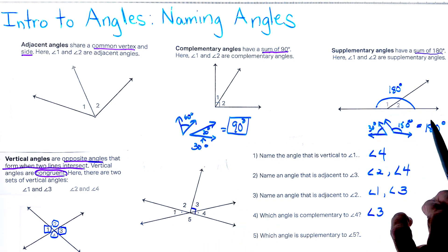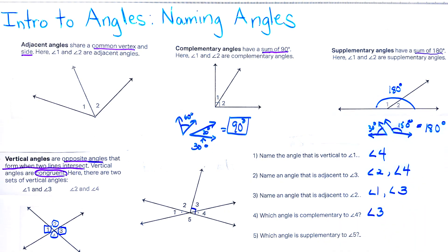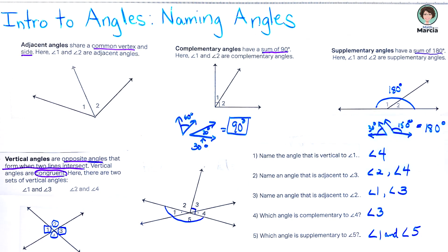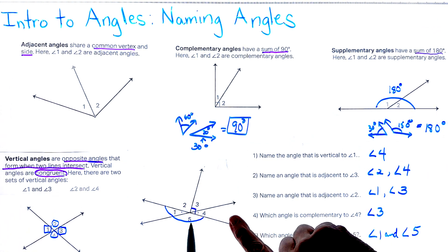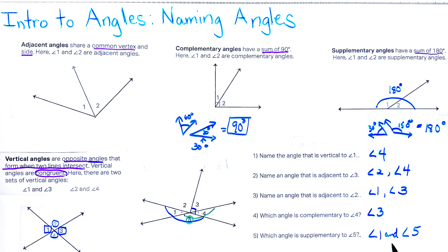Which angle is supplementary to angle five? Supplementary means the angles add up to 180 degrees, and notice the two angles actually form a line. Looking at this picture, angle one and angle five are supplementary. There is also another one — angle four and angle five also form a line, so angle four is supplementary to angle five as well. Both angle one and angle four are supplementary to angle five.